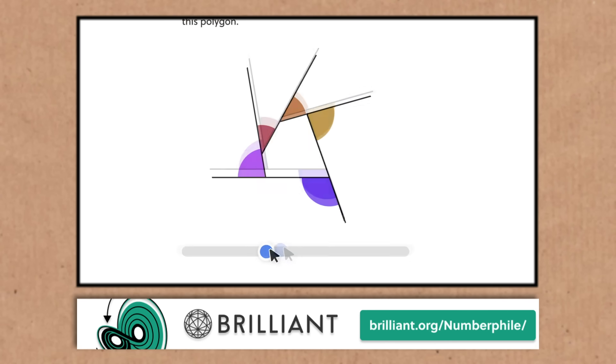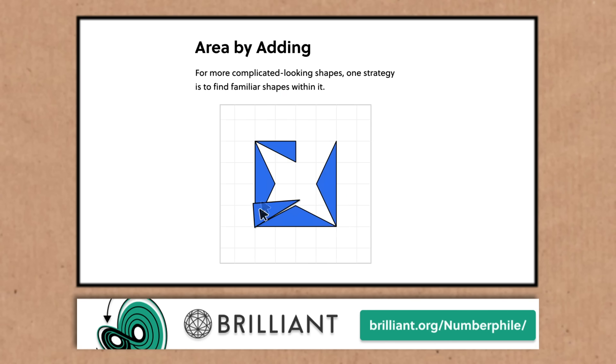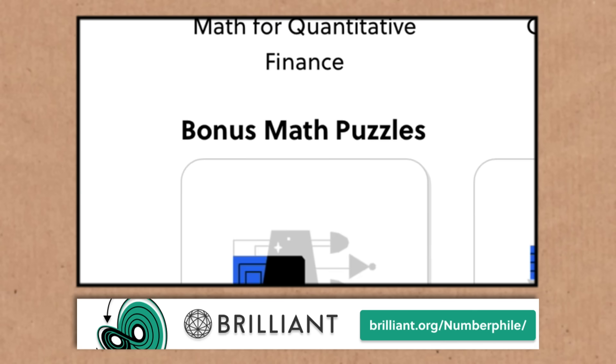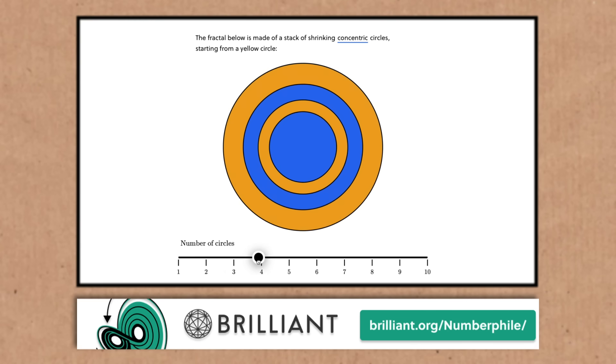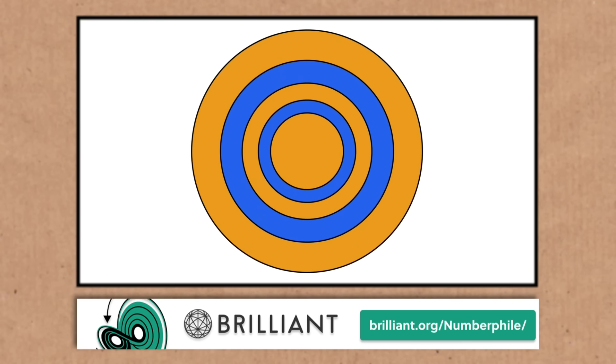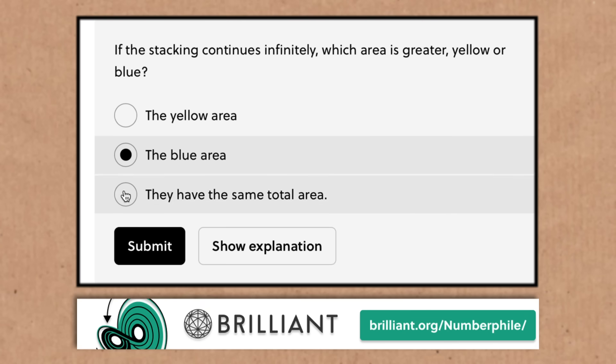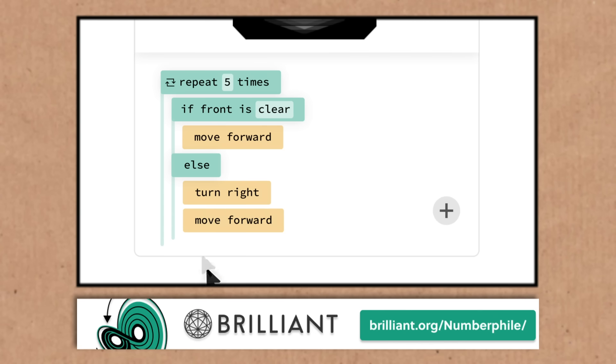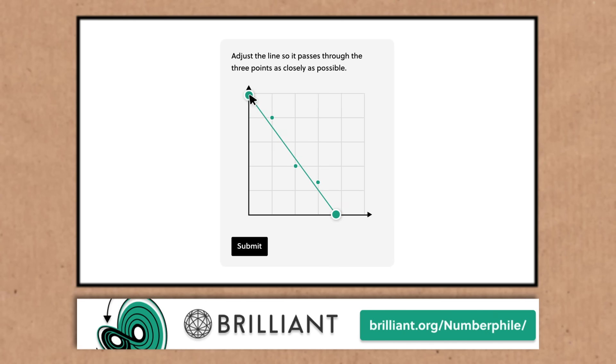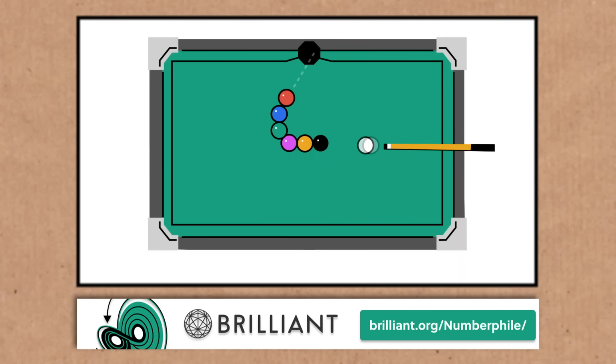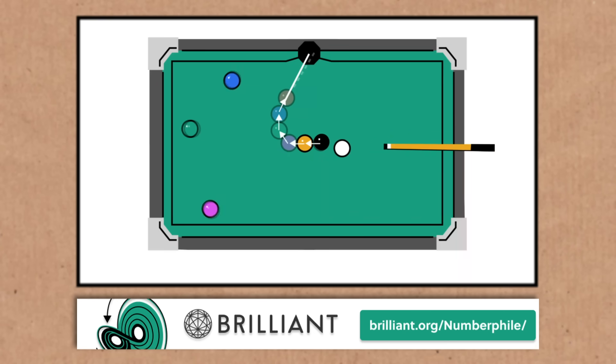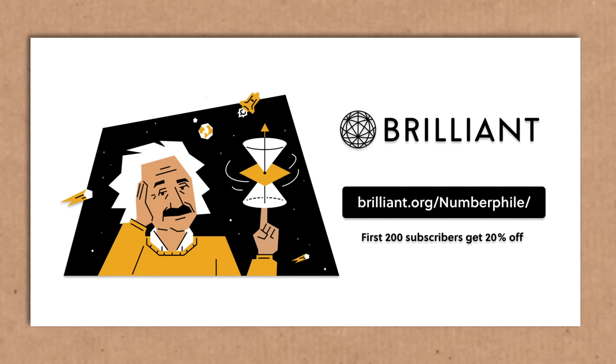I've recently started checking out these little bonus puzzles. I really like them. Have a look at this. If you keep stacking these circles forever, will the blue or yellow area be greater? Or will they be the same? I've been thinking about it, and now I'm about to find out if I was right. This is a great place to hang out just to flex your brain cells. You can do a free 30-day trial with Brilliant. You can also get 20% off their full premium service by going to brilliant.org slash numberphile.